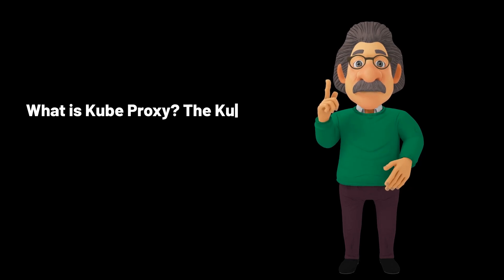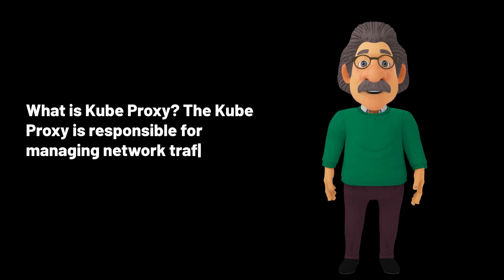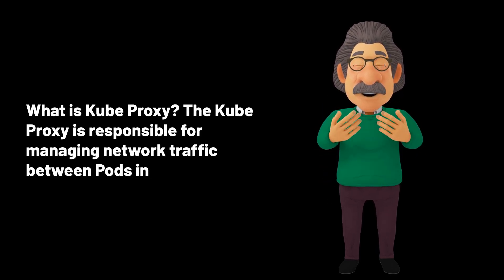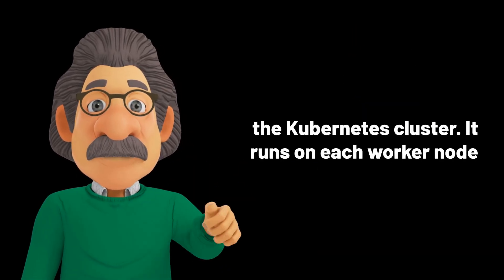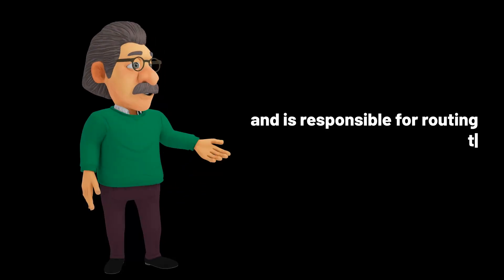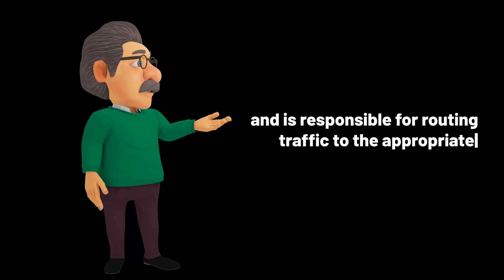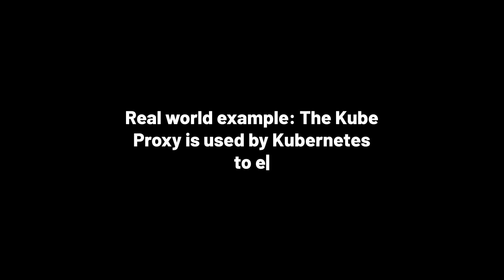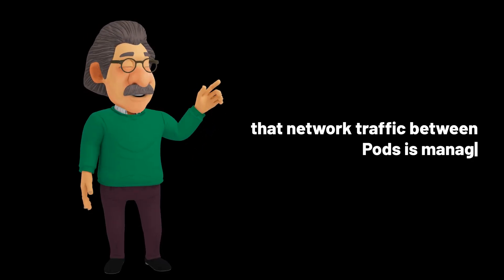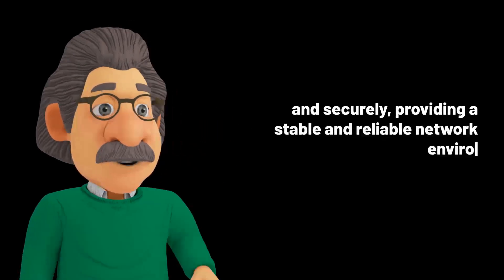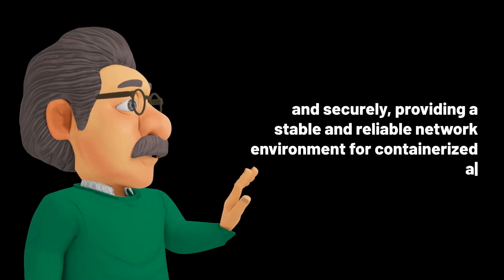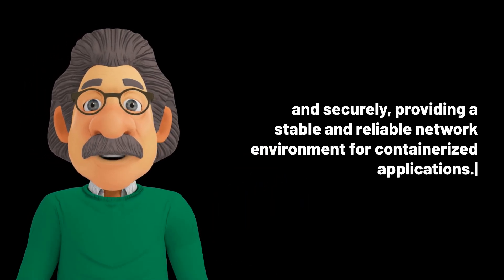What is kube proxy? The kube proxy is responsible for managing network traffic between pods in the Kubernetes cluster. It runs on each worker node and is responsible for routing traffic to the appropriate pod. Real-world example: the kube proxy is used by Kubernetes to ensure that network traffic between pods is managed efficiently and securely, providing a stable and reliable network environment for containerized applications.